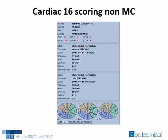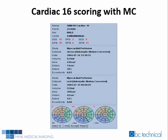Cardiac XVI's non-motion corrected study quantitative scoring results: the summed stress score was 8, the summed rest score was 5, and the summed difference score equaled 3. Cardiac XVI's motion corrected study quantitative scoring results: the summed stress score equaled 15, the summed rest score was 5, and the summed difference score equaled 9.